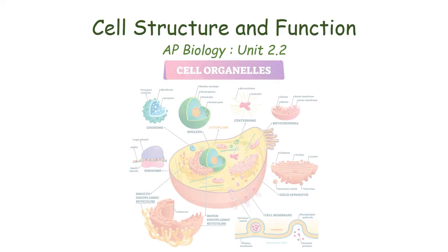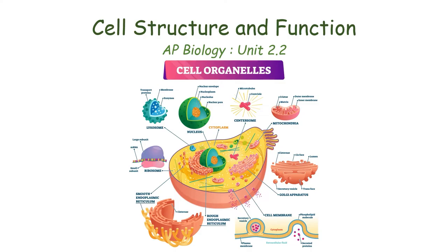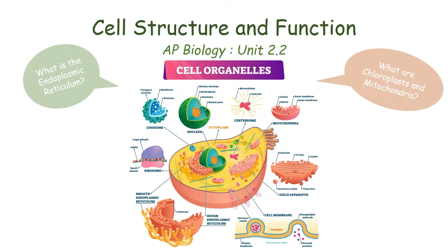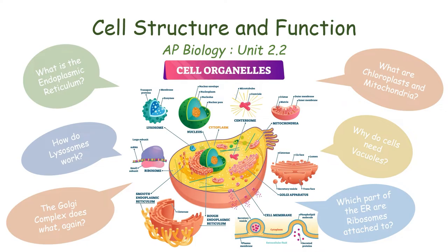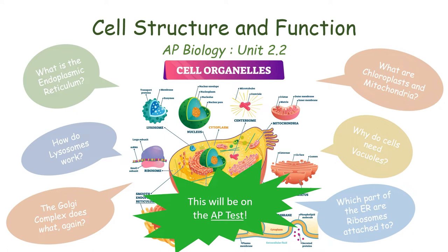Just because cells are small does not mean they aren't complex. Eukaryotic cells have dozens or even hundreds of tiny components called organelles that are constantly completing tasks to keep the cell alive. In this video, we are going to cover some of the most important organelles and see how they function to keep cells alive. Plus, this information will be on the AP test, so stick with us as we cover everything you need to know about cell organelles.